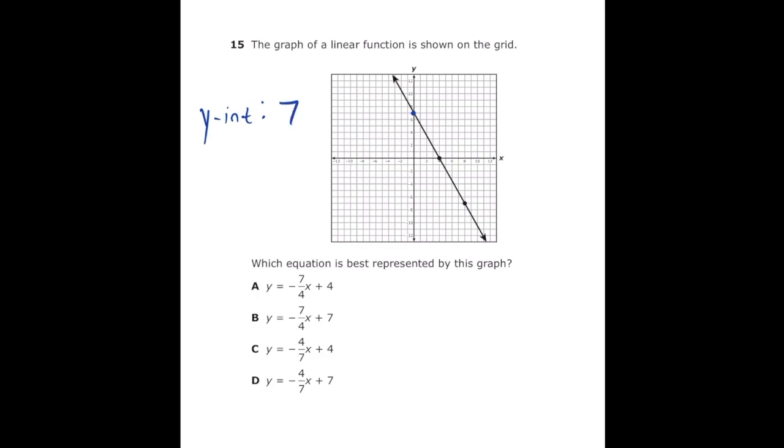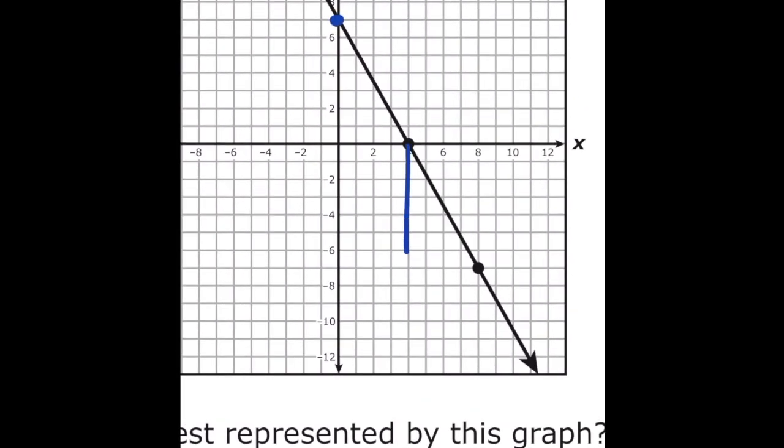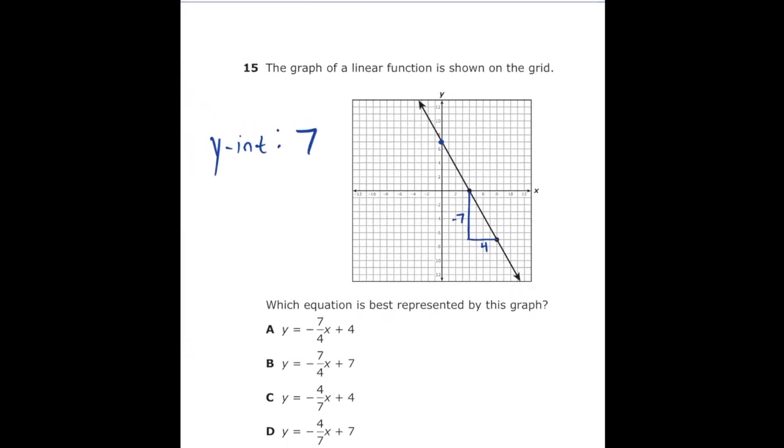Now I'm going to find the slope, and I'm just going to use the two points they give us. So I'm going to make myself a right triangle, and since I'm going down, I'm going to put a negative seven next to that side, and then I go to the right four. So we know that our slope is rise over run, so our slope is negative seven over four. So now we just plug it into slope-intercept form. So our equation should be y = -7/4 x + 7, and that's going to be letter B.